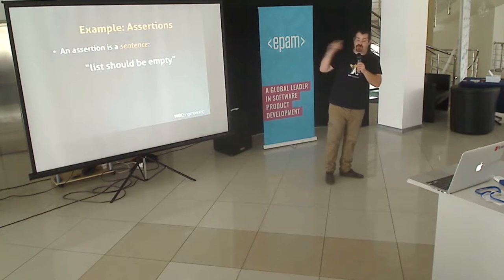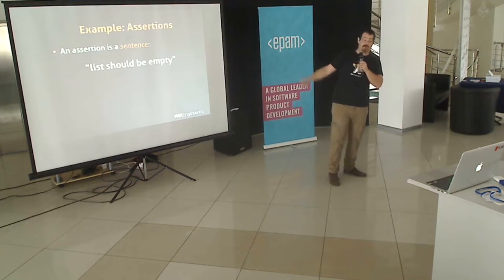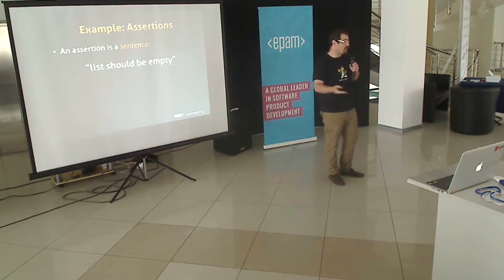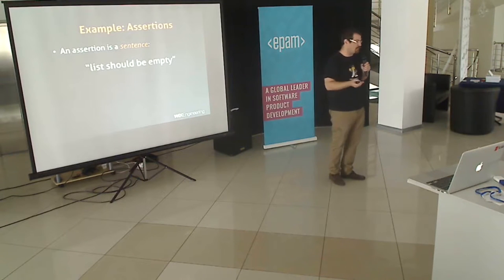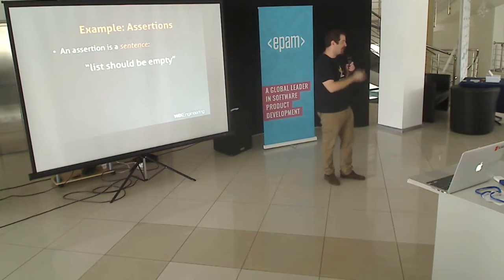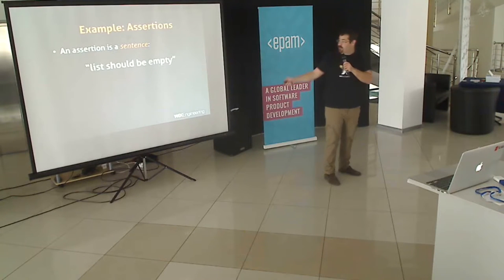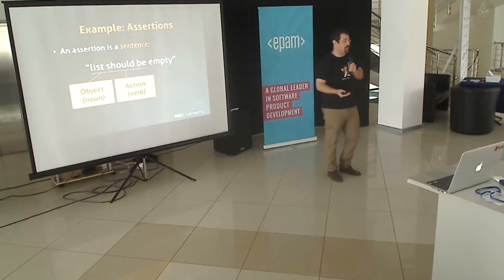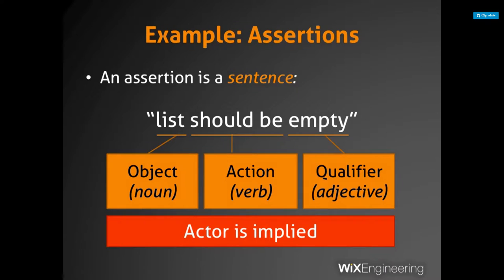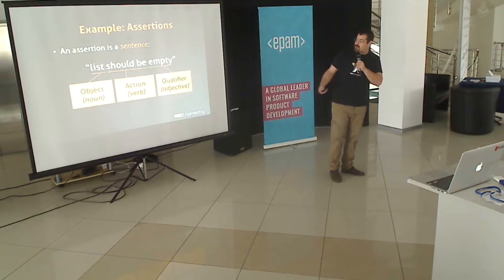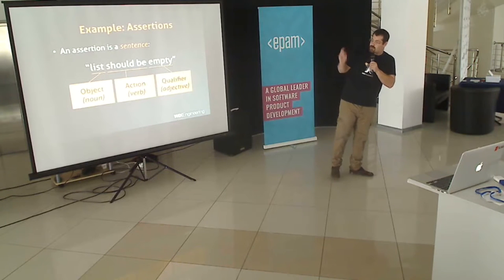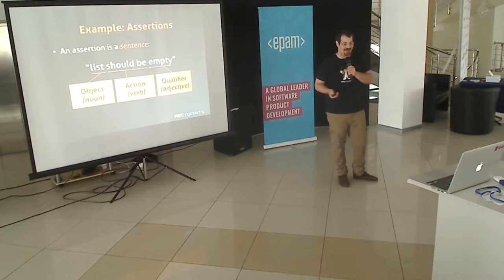We have our nouns that describe objects, adjectives that qualify objects, verbs and adverbs. It's easy to think of a programming language as something completely separate from English or any spoken language, but in effect it deals with the same things — the transfer of information in a precise and concise way. The idea is to express things as precisely as possible with as few words and letters as possible while still making sense.